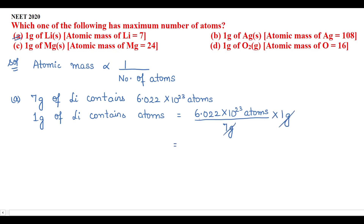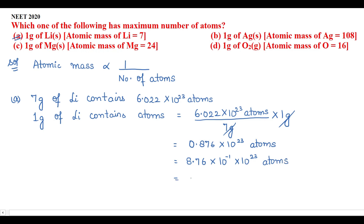Cancelling grams, when I divide 6.022 by 7 the answer is 0.876 × 10²³ atoms. Rearranging by moving the decimal one place right gives 8.76 × 10⁻¹ × 10²³. Adding the powers: −1 + 23 = 22, so the answer is 8.76 × 10²² atoms.